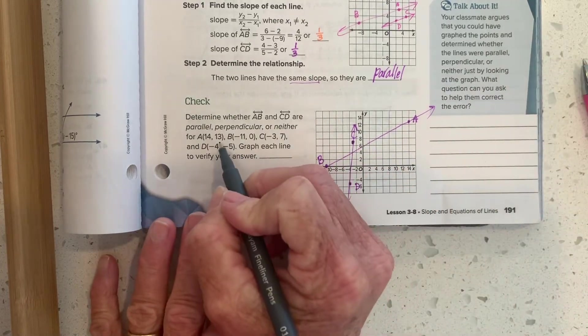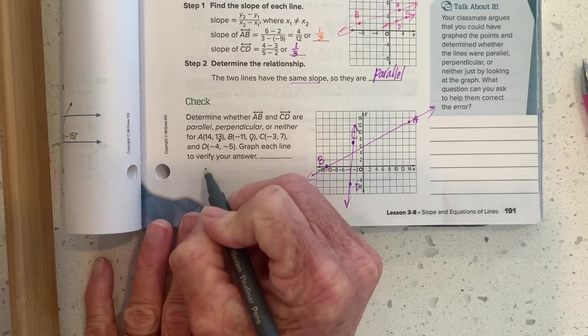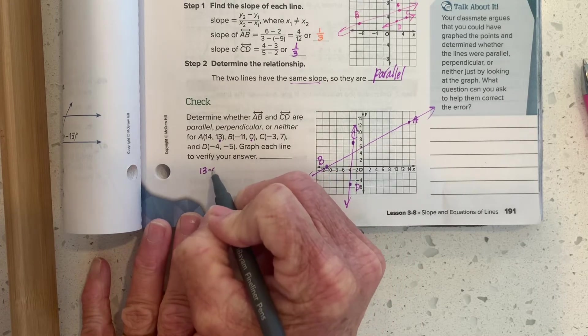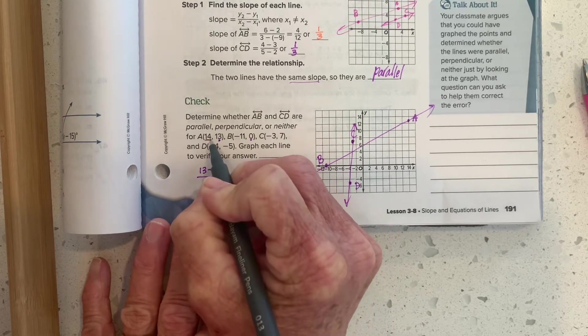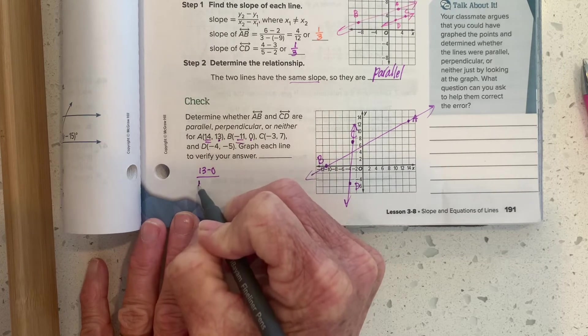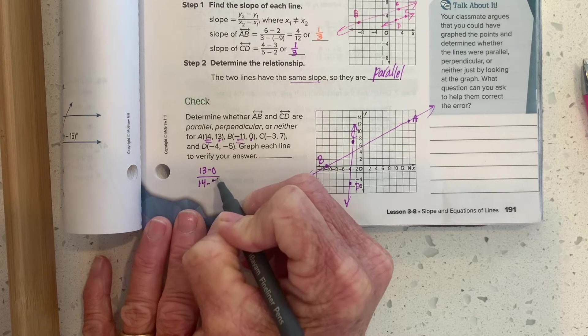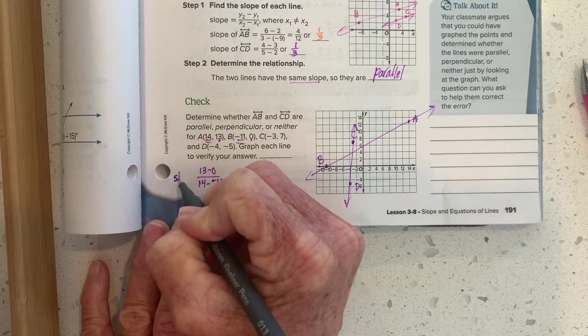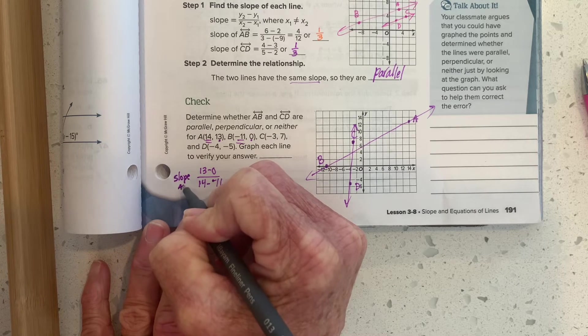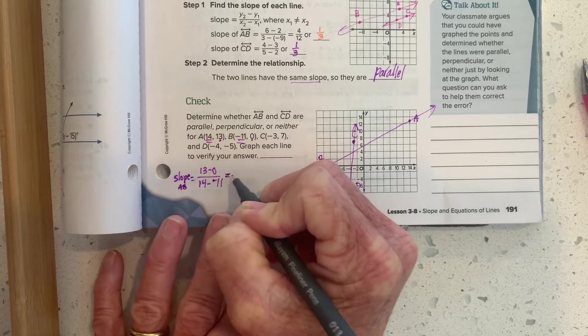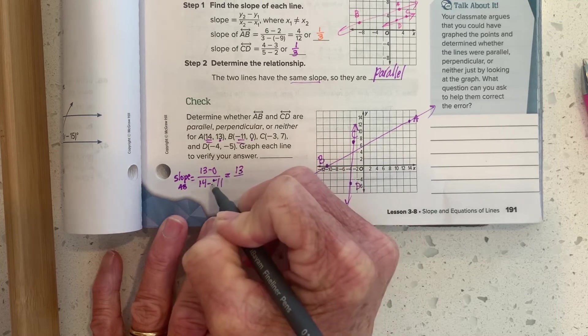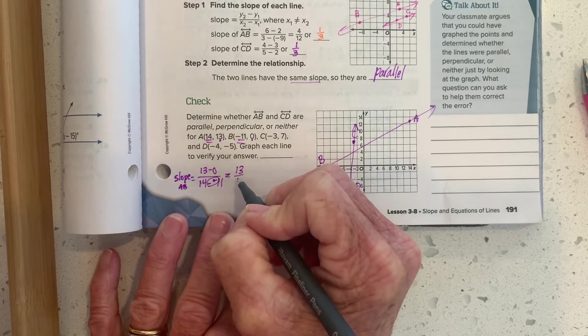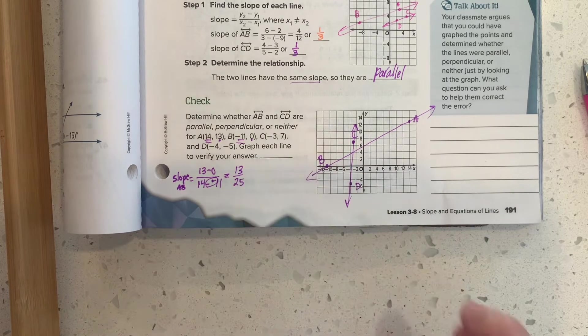So for AB, we'll do this Y minus that Y, 13 minus zero. And then this X minus that X, 14 minus negative 11. We're finding the slope of AB. So I end up with positive 13, 14, that's going to become addition over 25.